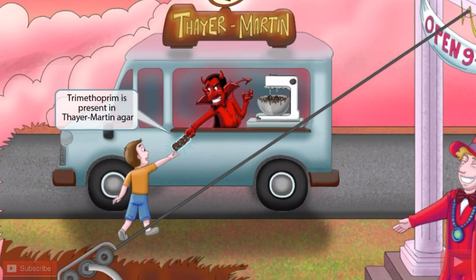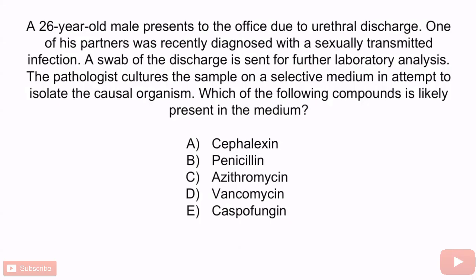Now let's do a question. A 26-year-old male presents to the office due to urethral discharge. One of his partners was recently diagnosed with a sexually transmitted infection. A swab of the discharge is sent for laboratory analysis, and the pathologist cultures the sample on a selective medium to isolate the causal organism. Which of the following compounds is likely present in the medium? A. Cephalexin, B. Penicillin, C. Azithromycin, D. Vancomycin, or E. Caspofungin.